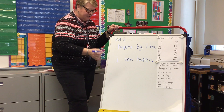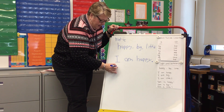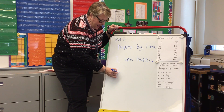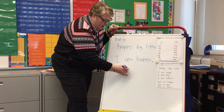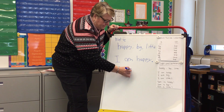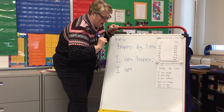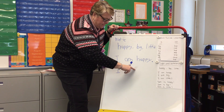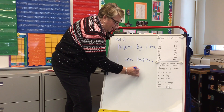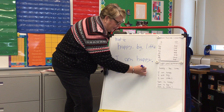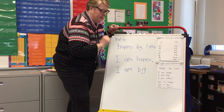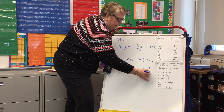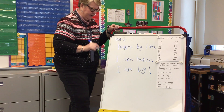The next sentence could say 'I am big.' I am big — I uppercase, A like apple, M like mouse. I have a space here. And then 'big' — B, I like iguana, and G like goat. And I could put an exclamation point and read it like this: I am big!